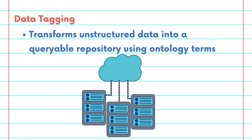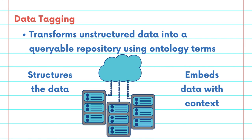Let's unpack the process of data tagging. Data tagging transforms once unstructured data into a well-organized, queryable repository using ontology terms. This process not only structures the data, but also embeds it with rich contextual meaning.